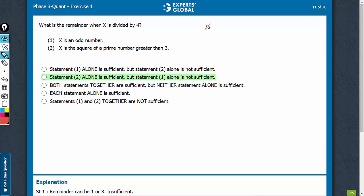The question is, what is the remainder when x is divided by 4? Statement 1: x is odd. So x can be of the form 4k plus 1 or 4k plus 3. These two cases cover all the odd numbers.